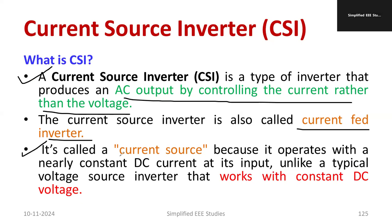It is called a current source because it operates with nearly constant DC current at the input. At the input, we are providing the constant DC current rather than voltage. The output will be constant DC voltage. However, the main parameter to control the output voltage is actually the constant DC current.